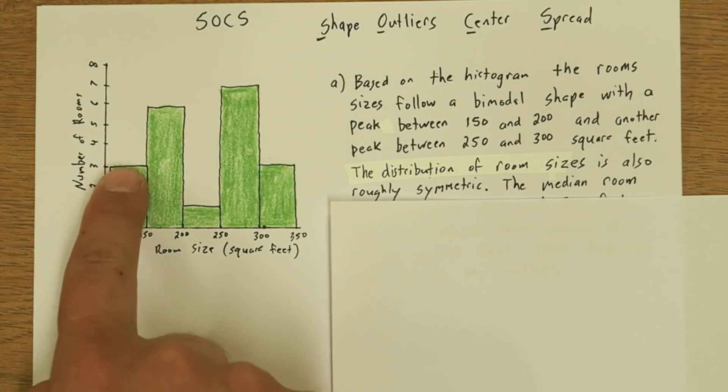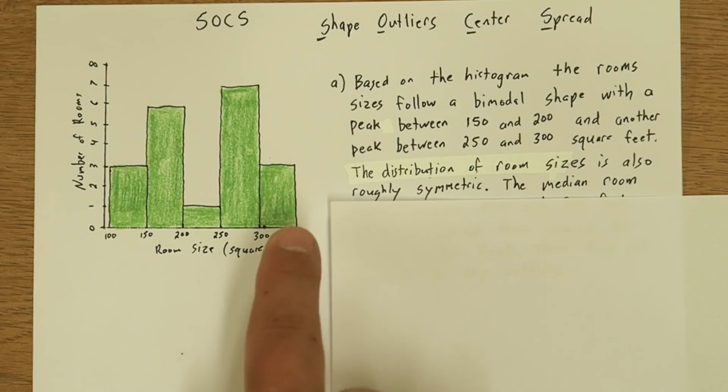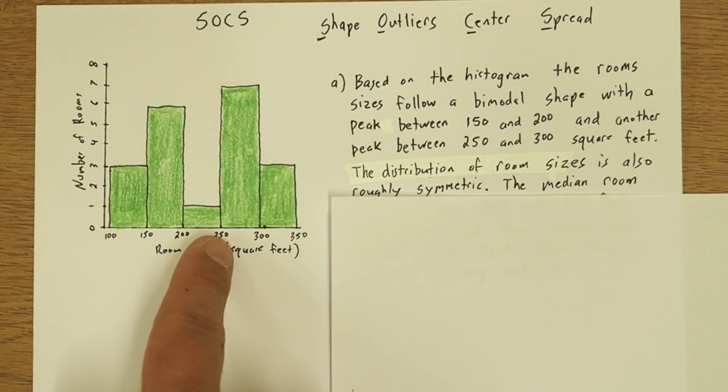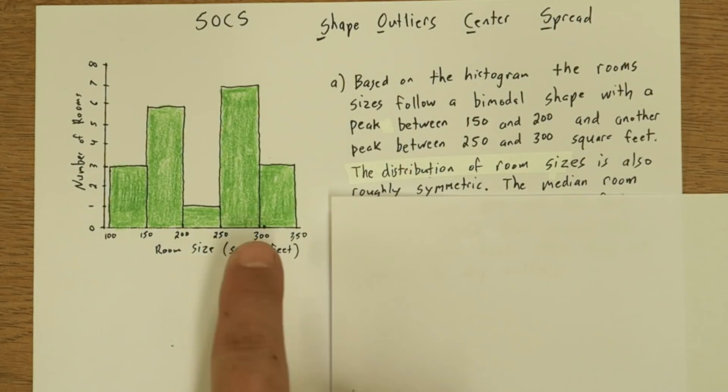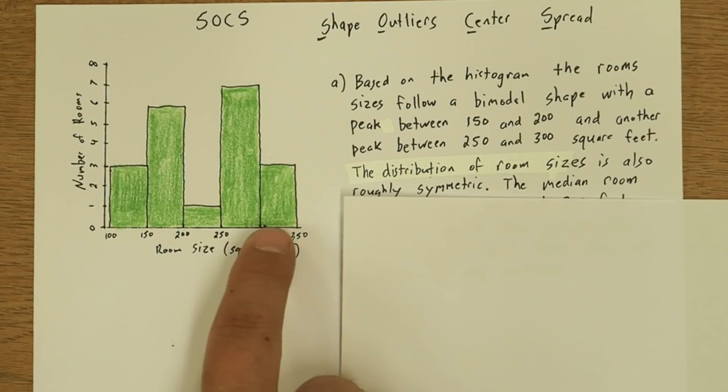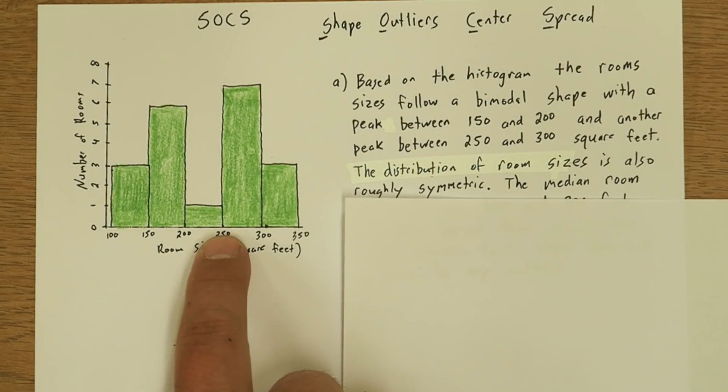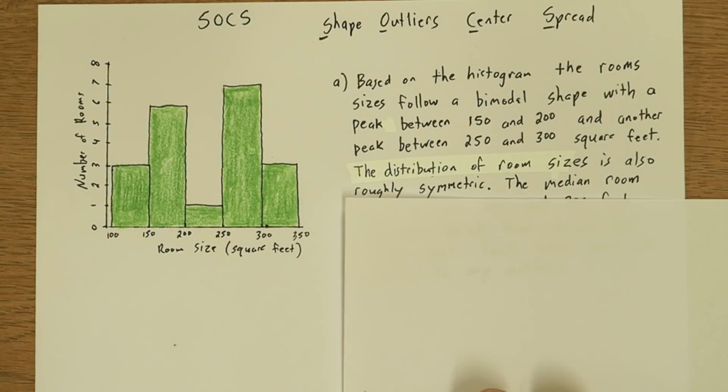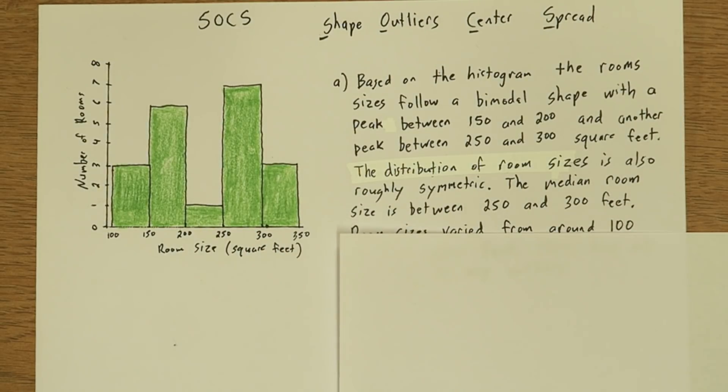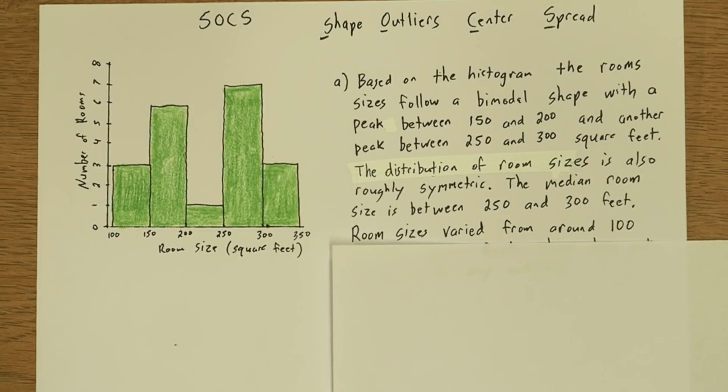So if we count up here, 3, 6, that's 9 rooms, 10 rooms. So the first 10 rooms are all 250 or less, and rooms 11 to 20 are up here. So the median is going to be somewhere between 250 and 300. So that's what we say: the medium room size is between 250 and 300 feet.